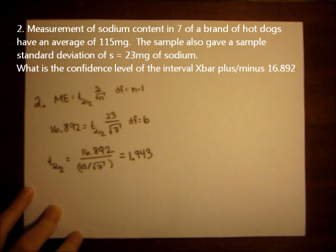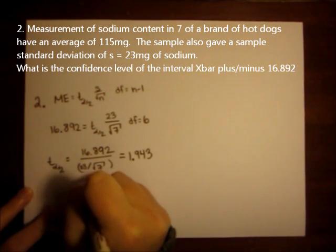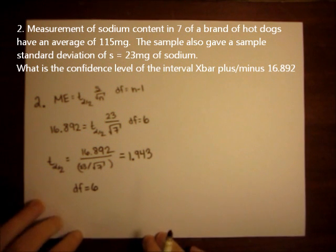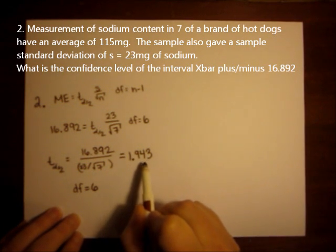So now if I look at my t table, I know I have degrees of freedom equals 6. If I look at my t table in the degrees of freedom equals 6 row, look for the closest value to 1.943.